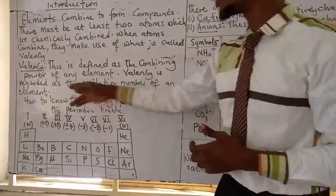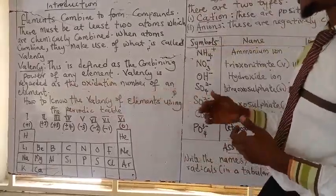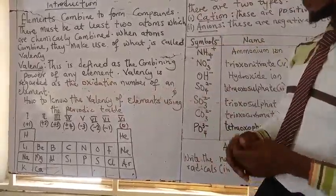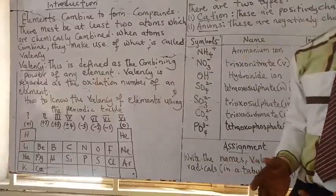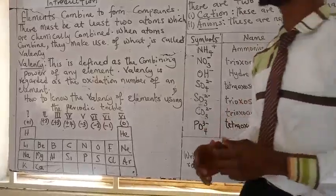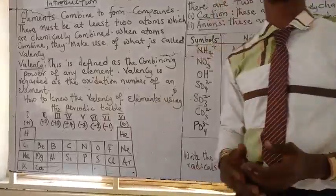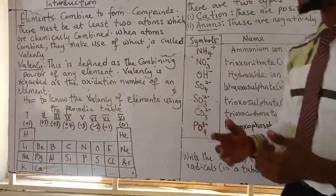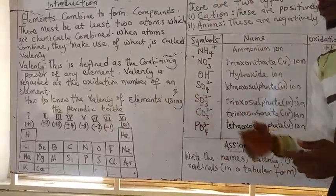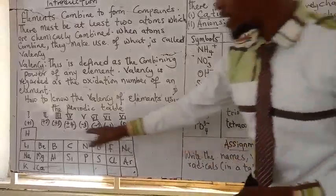Valency is also regarded as the oxidation number of an element. Now how do you know the valency of all elements in the periodic table? Instead of memorizing, there is a short form you can actually use to understand the valency of the various elements via the periodic table.